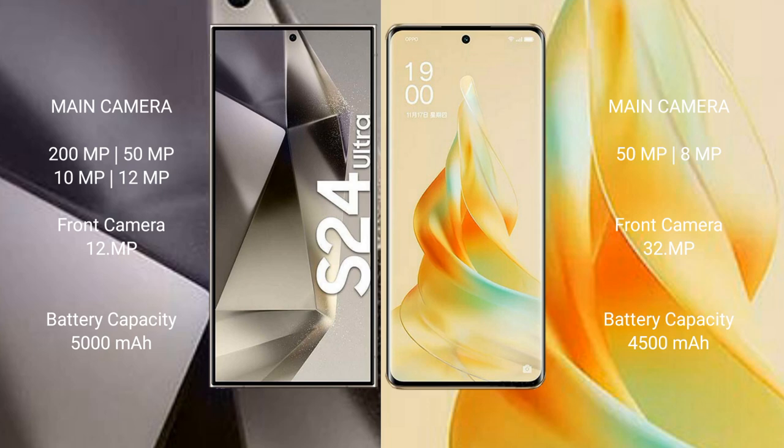Samsung Galaxy S24 Ultra has a 5000mAh battery with 45W fast charging support. OPPO Reno 9 Pro has a 4500mAh battery with 67W fast charging support.